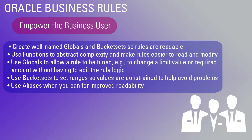Another way to use globals is to allow rules to be tuned — like a knob on a radio. Say I want to push approval to the next level of management when an order amount hits $10,000. But at a particular time of year when I need to close a lot of orders automatically and avoid manual approvals, I might tune my rule by changing that global from $10,000 to $15,000. Maybe I accept a little more risk, but rules fire automatically more frequently and I get through end of quarter more easily.